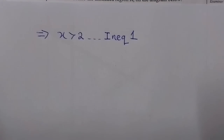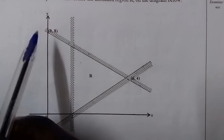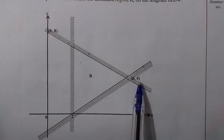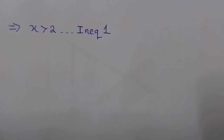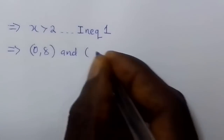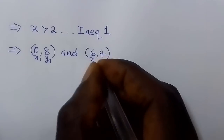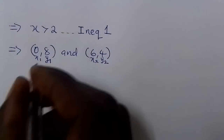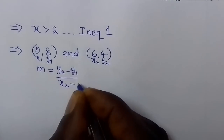For inequality 2, we use the line passing through (0, 8) and (6, 4). We'll determine its gradient first and then the equation of the line, then come up with the inequality that defines the unshaded region R. We denote (0, 8) as (x1, y1) and (6, 4) as (x2, y2). Gradient is determined by m = (y2 − y1) / (x2 − x1).